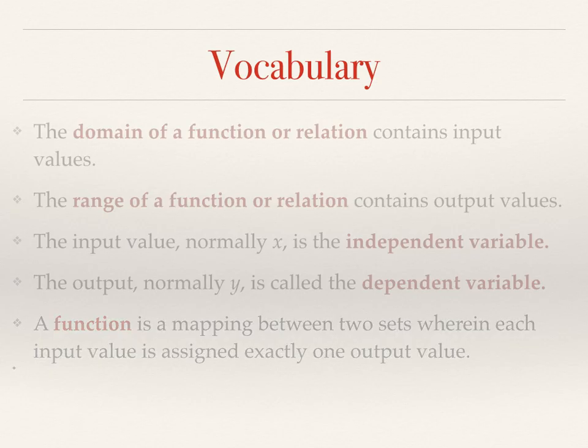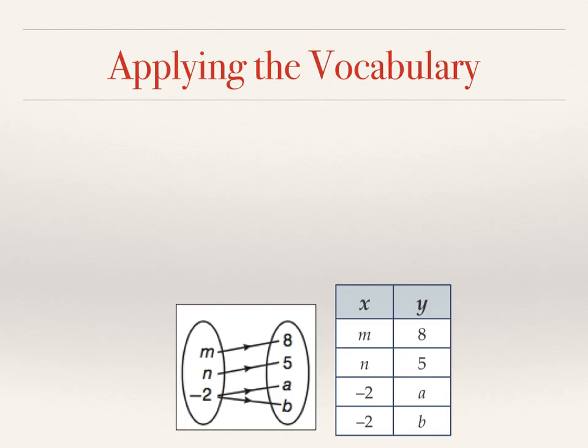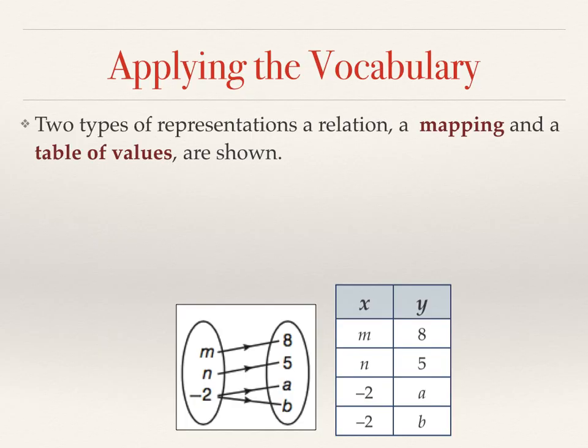Let's apply the vocabulary to an example. Here we have two different representations of the same relation. On the left we see a mapping and on the right is a table of values.